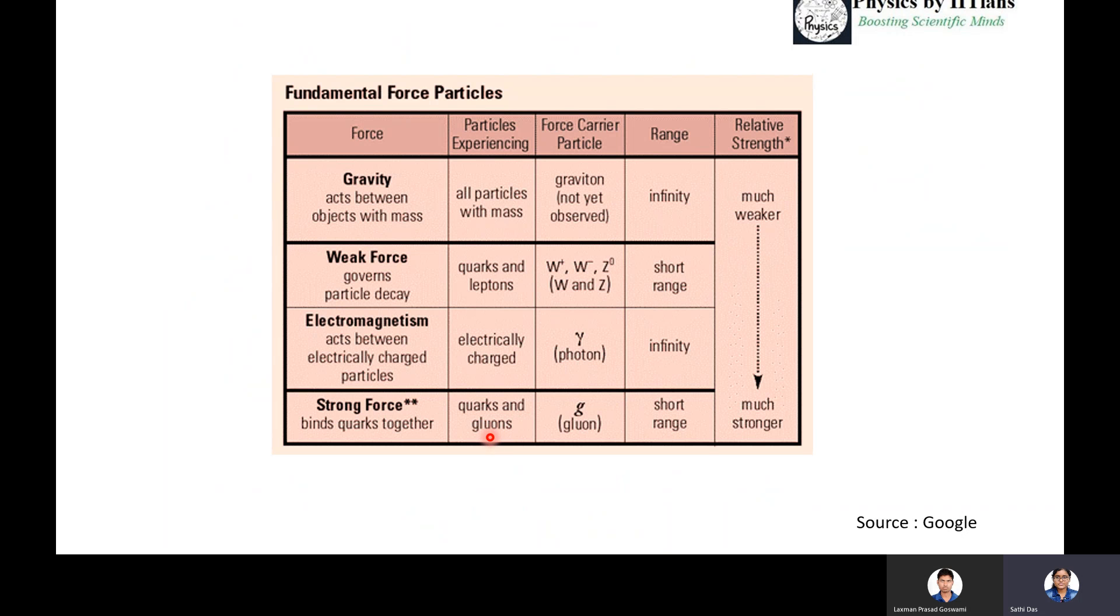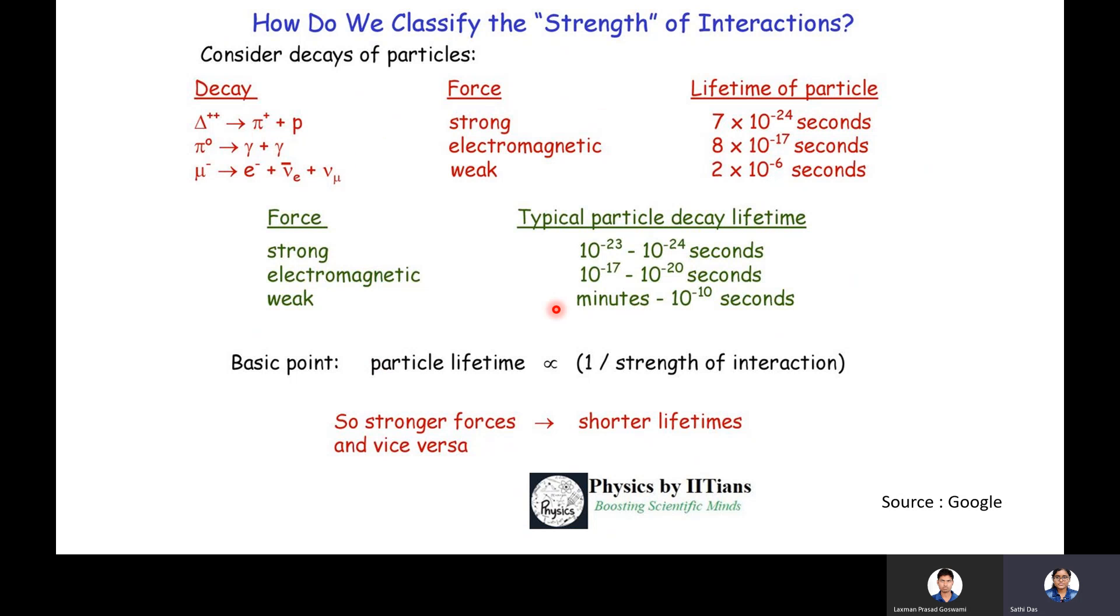You should remember this table. For the strong force, the particle lifetime τ is 10^-23 to 10^-24 second. Electromagnetic, τ is 10^-17 to 10^-20 second. Weak, it is 10^-10 second, order of 10^-10 or 10^-11 second. The basic point is the particle lifetime is inversely proportional to the strength of the interaction. Stronger forces have shorter lifetime. Weaker forces have larger lifetime.